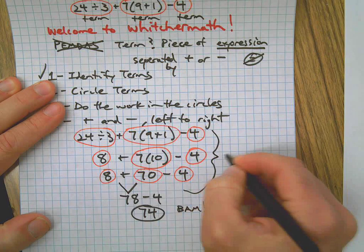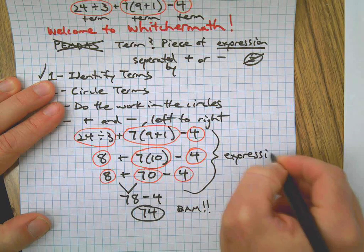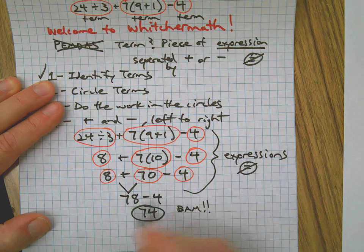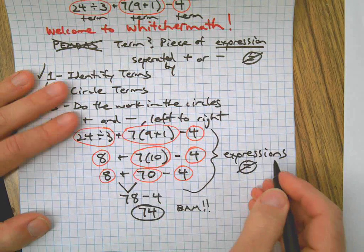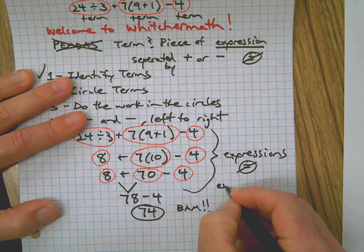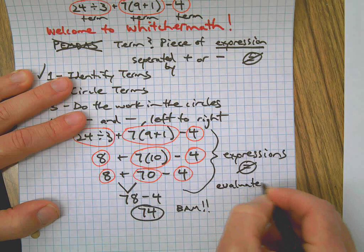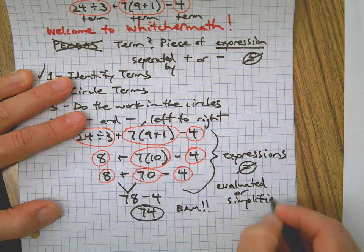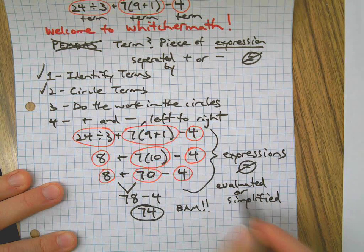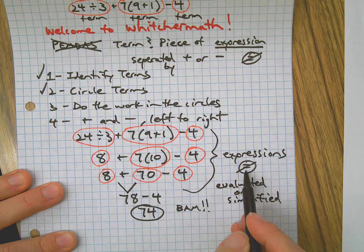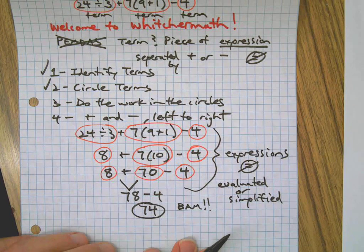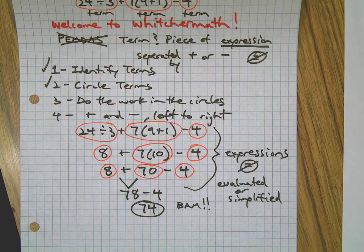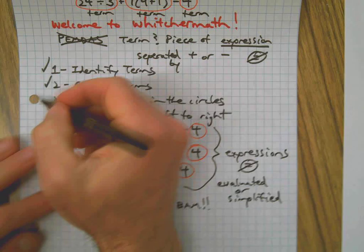Just on a side note for vocab, all of these are expressions - there's no equal sign. Once I put an equal sign at the end it becomes an equation, but we're dealing with expressions. What did we do? We evaluated them or simplified. When you see words like that on a test, that just means figure out the answer, but it also means don't put an equal sign.